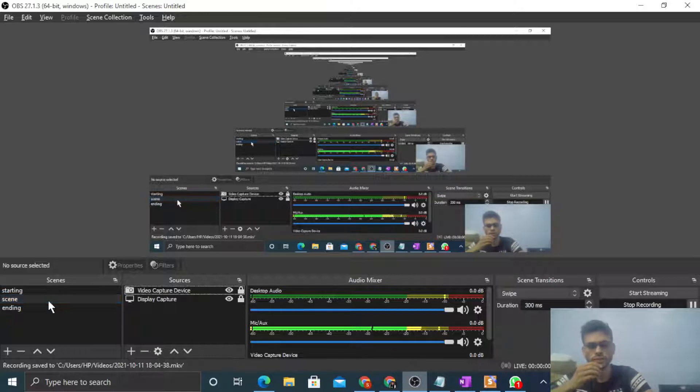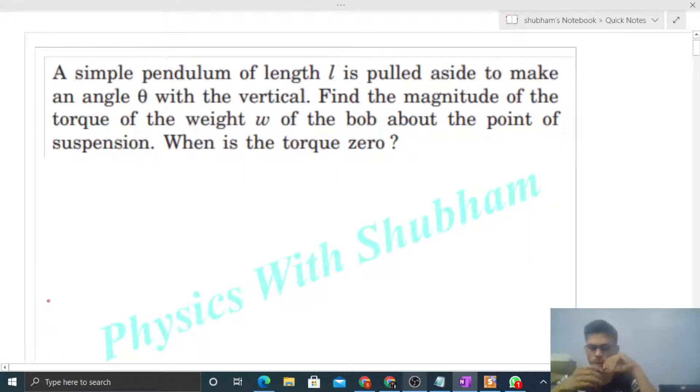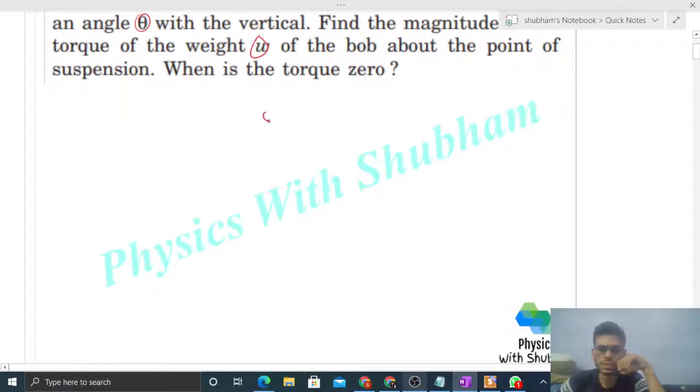Okay, hi everyone. So today let's discuss this interesting problem. It says a simple pendulum of length l is pulled aside to make an angle theta with the vertical. Find the magnitude of the torque of the weight w of the bob about the point of suspension. When is the torque zero?